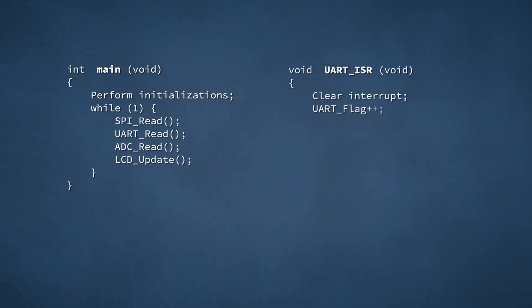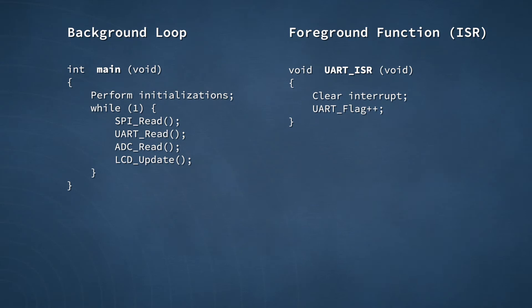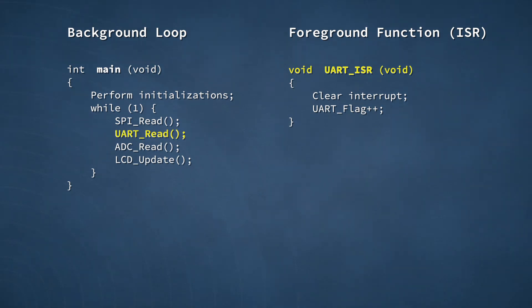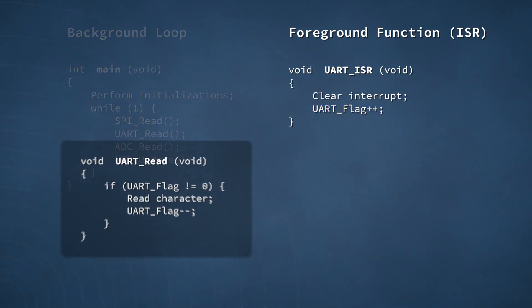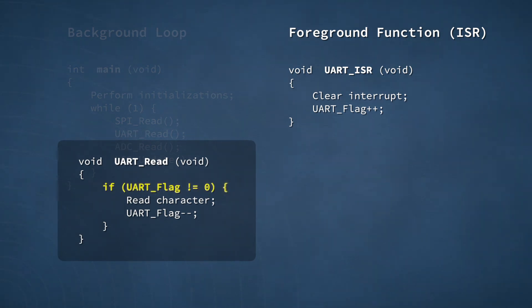That may sound fairly abstract, so let's think about a specific scenario where synchronization would be useful. The foreground-background system shown here is a good example. In this system, the responsibility for processing incoming characters from a UART is shared by the foreground and background functions. The foreground function, or interrupt handler, is UART ISR, and the background function is UART READ. As the code indicates, UART ISR increments a flag variable each time a new UART character is received, but all other work involved in receiving characters is offloaded to UART READ. The first thing this function does is check the value of the flag. If the flag is non-zero, a character is available, so UART READ decrements the flag and processes that character.